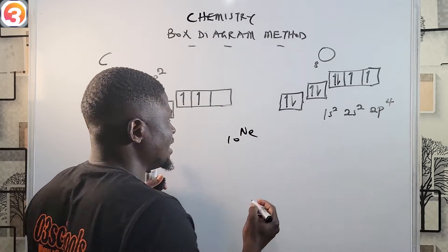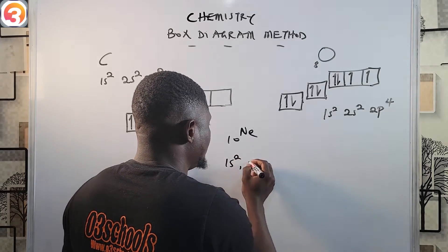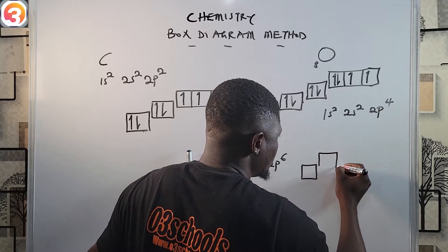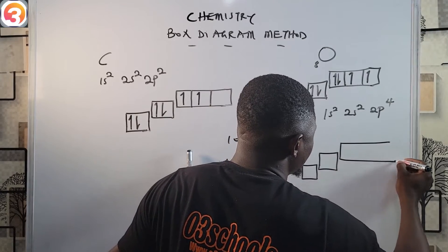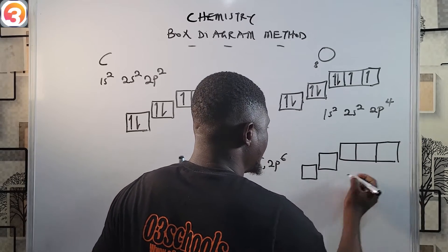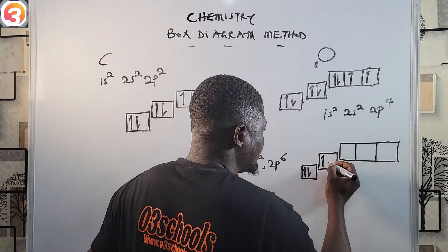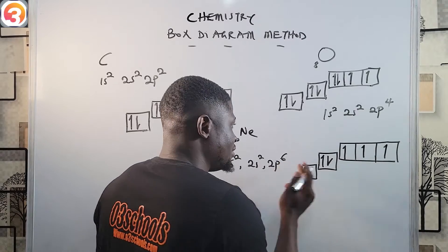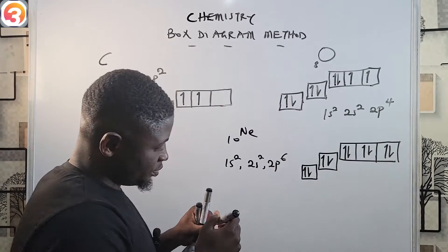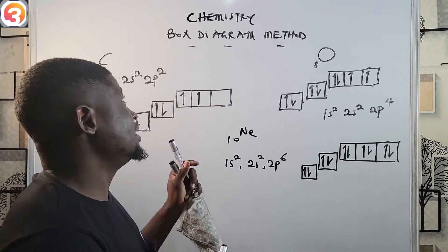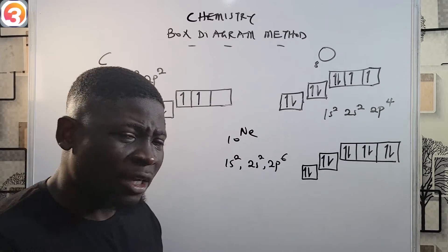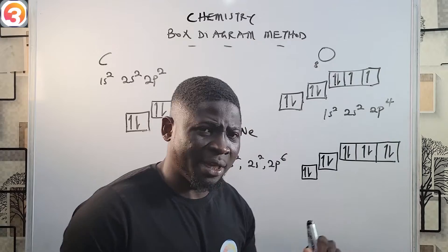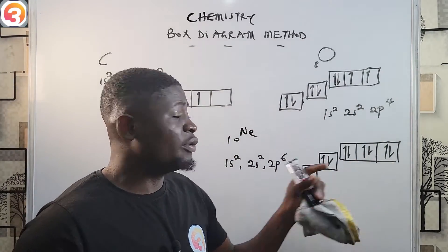For neon, the tenth element — 1s², 2s², 2p⁶ — we have the first box, second box, and third box with three degenerates. The 1s and 2s boxes are each filled with one arrow up and one down. For the 2p⁶, we first fill one, two, three singly, then pair all three. This is how we fill electrons into orbitals using the box diagram method. A key observation is that electrons are filled singly before pairing begins, as seen in carbon, oxygen, and neon.